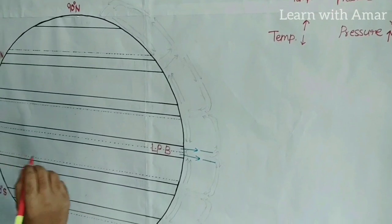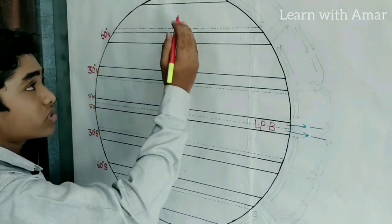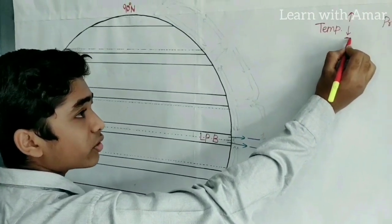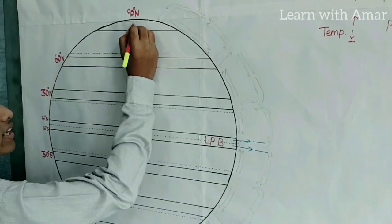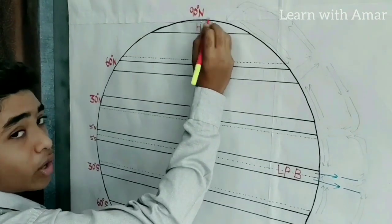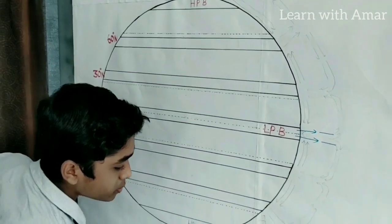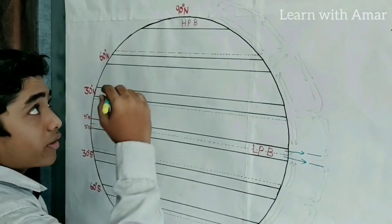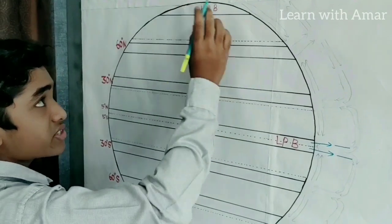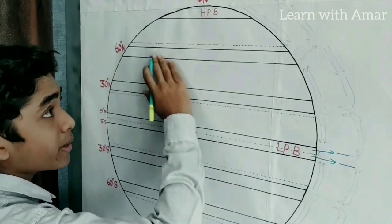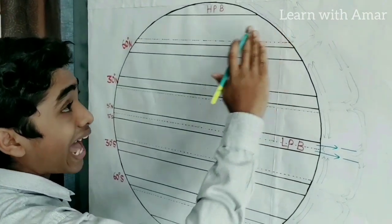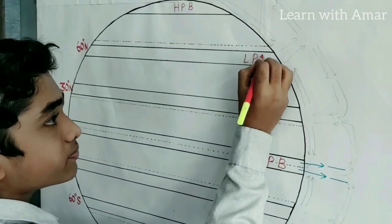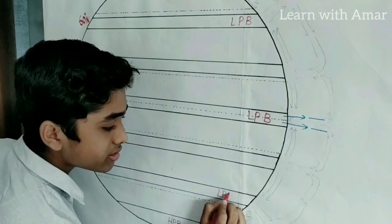Now let us look at the polar zones. Near the poles, we find the lowest temperatures — the temperature is very low. So what is the result for pressure? It is very high. So here we find a high pressure belt, in both the northern pole as well as the south pole. As a result, this region has higher pressure than the remaining surrounding regions, and those surrounding regions are low pressure zones — in the southern hemisphere too.